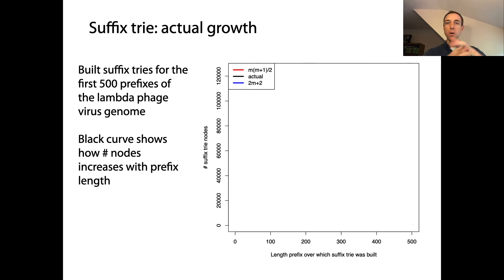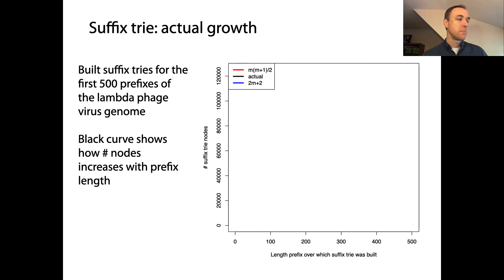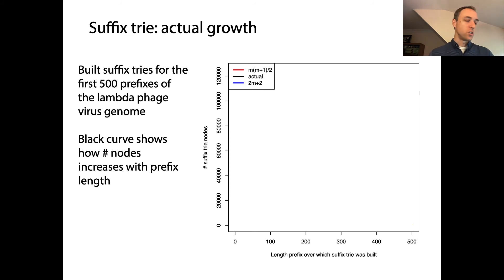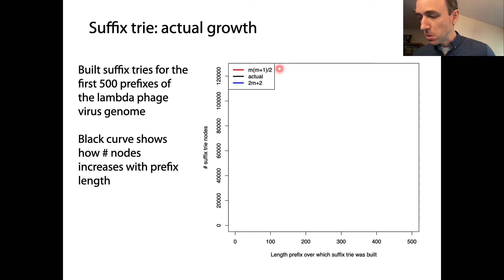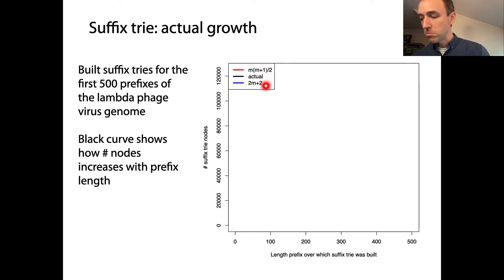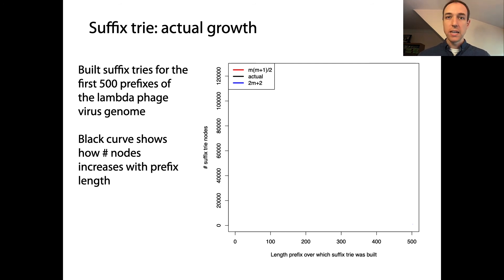I did an empirical experiment where I took a relatively short genome — a virus genome called lambda phage — and took the first 500 prefixes, from length 1 up to length 500. Because it's genomic sequence, it consists of A's, C's, G's, and T's. I'm going to draw three curves: the red curve corresponds to the maximum number of nodes we could possibly expect; the blue curve corresponds to the minimum number of nodes — these correspond to those first two cases we looked at, maximal versus no prefix sharing. Then I'm going to draw a black line corresponding to what I actually measured for this particular genome sequence.